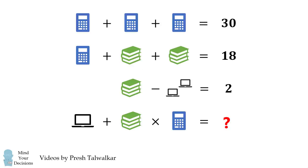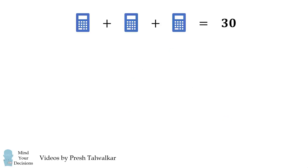To get started, we'll analyze each equation in turn. The first equation says three calculators are equal to 30, which means one calculator is equal to 10.